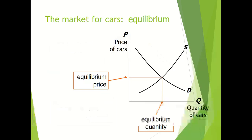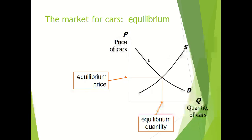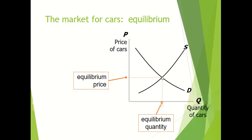Now the market for cars is at equilibrium where the two curves — supply and demand — intersect each other. This intersection point determines the equilibrium price and equilibrium quantity demanded and supplied. From this equilibrium point we can determine equilibrium quantity and equilibrium price.